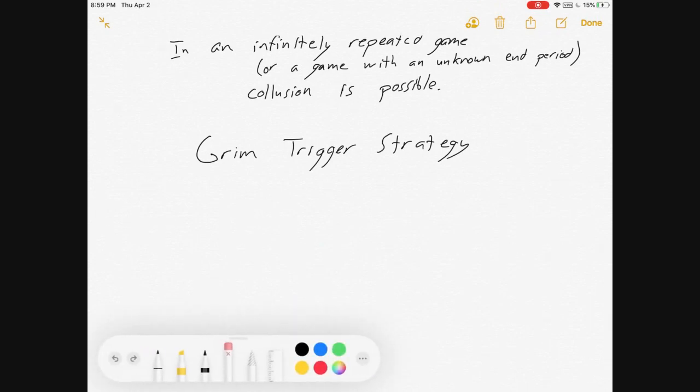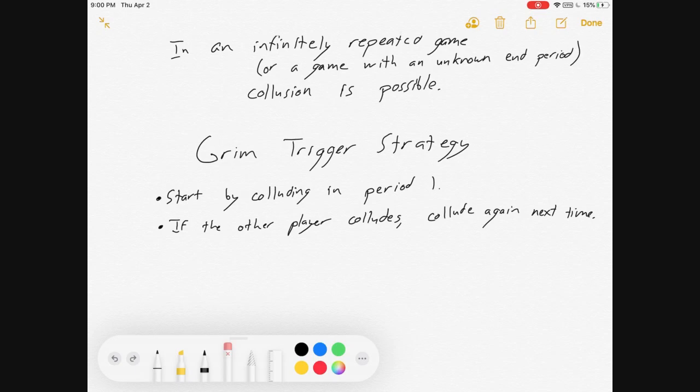So here it is, the Grim Trigger Strategy. The strategy is this: you start by colluding in period 1. If the other player colludes, collude again next time. If they betray you, then you're gonna play Cournot until the end of time.